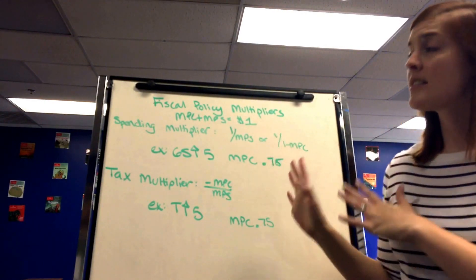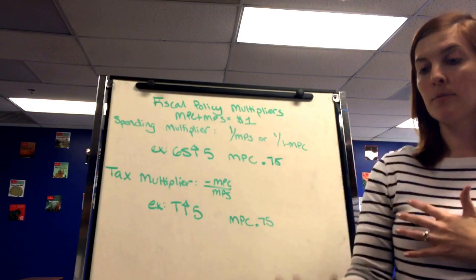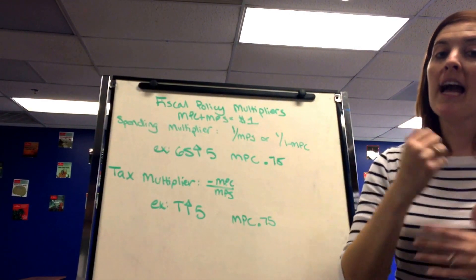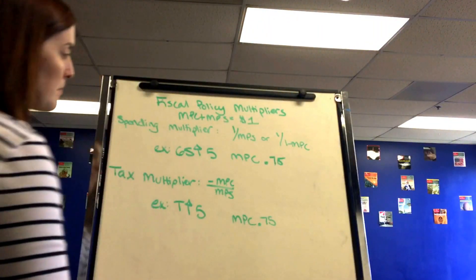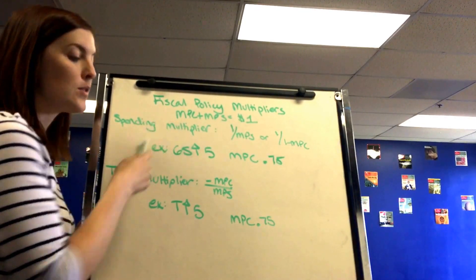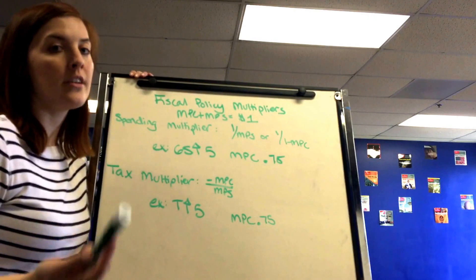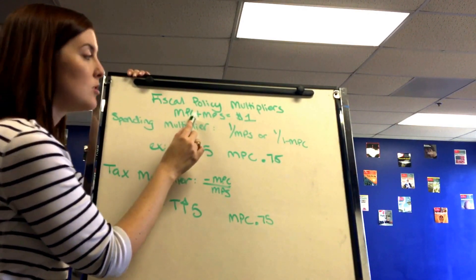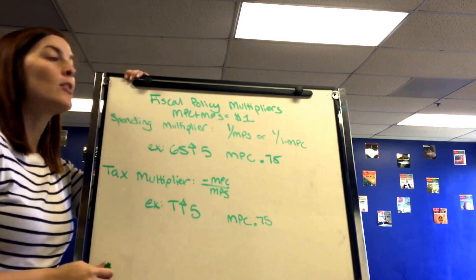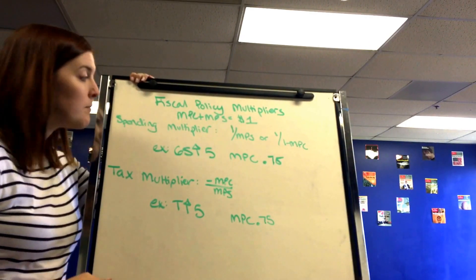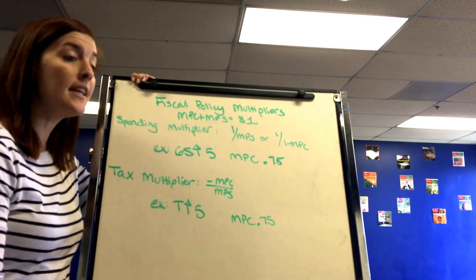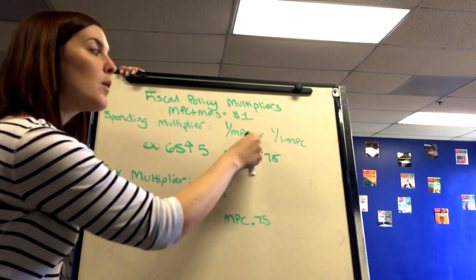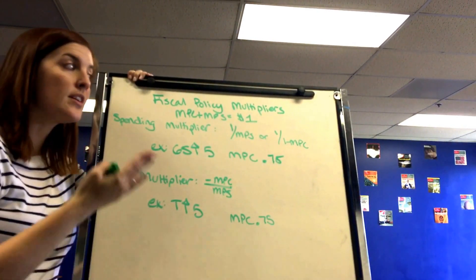Next are the spending and tax multipliers. These show how the government can increase or decrease GDP with fiscal policy, and how the spending tool versus the tax tool have slight differences in calculation. We measure at the margin — for each additional dollar of income, we look at how much a consumer spends (MPC, marginal propensity to consume) and how much they save (MPS, marginal propensity to save). These two always add up to equal 1.